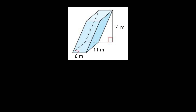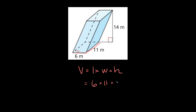Here we have a rectangular prism again, but this time it's slanted — it's leaning to the right. But it's going to be the exact same thing. Even if it's leaning, that doesn't change anything. So to find the volume it would again just be the volume equals the length times the width times the height. Here the length is 6, the width is 11, and the height is given right here as 14. So this is equal to 924 meters cubed.